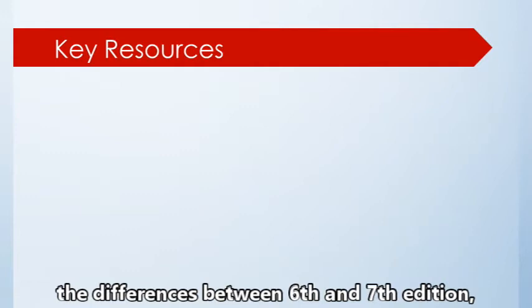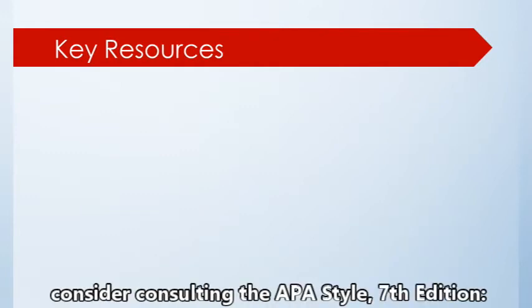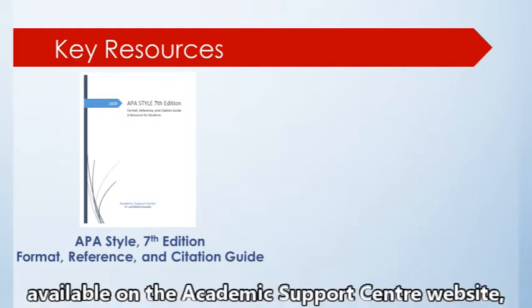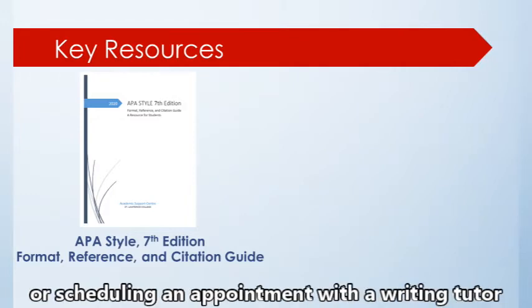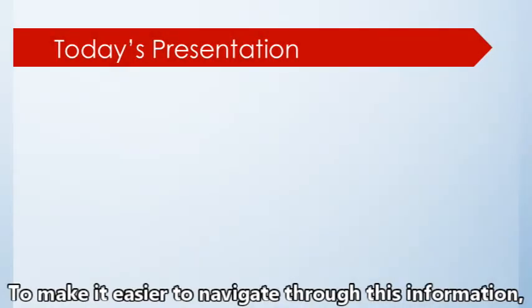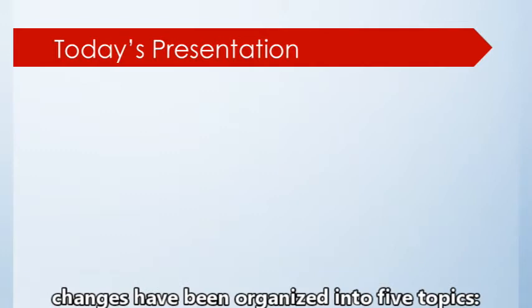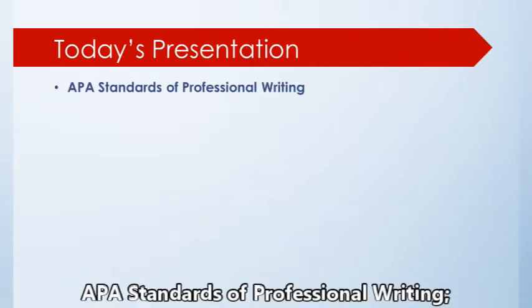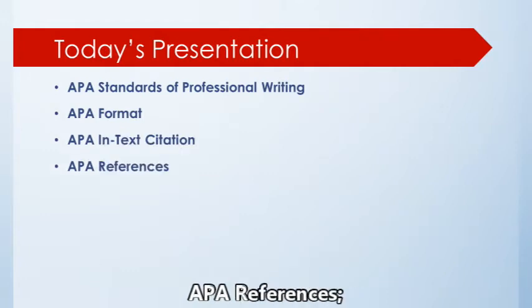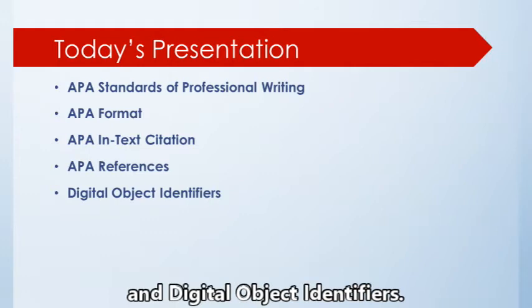This presentation will focus on highlighting the differences between 6th and 7th edition, but for more information, consider consulting the APA Style 7th Edition Format, Reference, and Citation Guide, available on the Academic Support Center website, or scheduling an appointment with a writing tutor. To make it easier to navigate, changes have been organized into 5 topics: APA Standards of Professional Writing, APA Format, APA In-Text Citation, APA References, and Digital Object Identifiers.